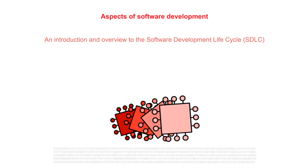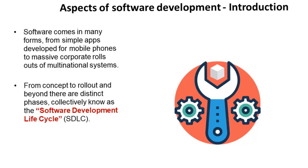Although not mentioned directly in the specification, in this video we're going to give you an introduction and overview to the software development life cycle, and then in the rest of the videos in this section we'll dive into the specific areas which are covered in your spec. Software comes in many forms, from simple apps developed for mobile phones, to massive corporate rollouts of multinational systems. From an initial concept to rollout and beyond, there are distinctive phases collectively known as the software development life cycle.